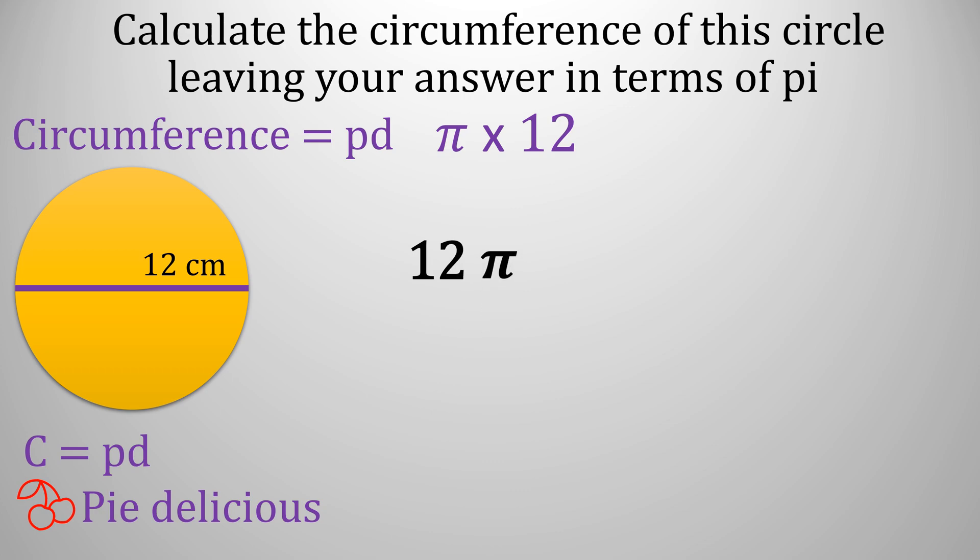number first, so it would be 12 times pi, and then put in the measurement which would be centimeters for the circumference of the circle.